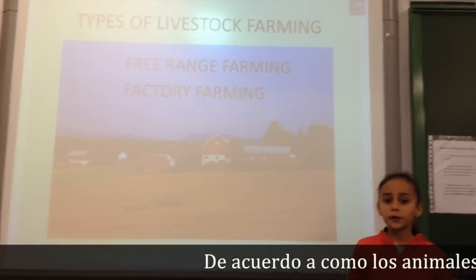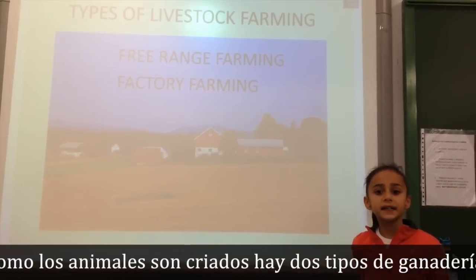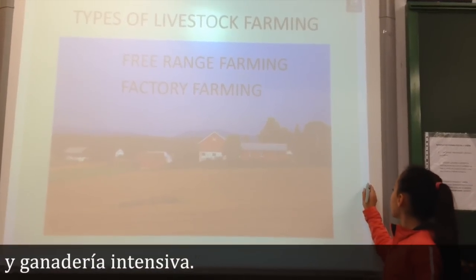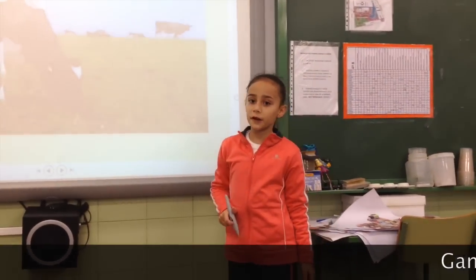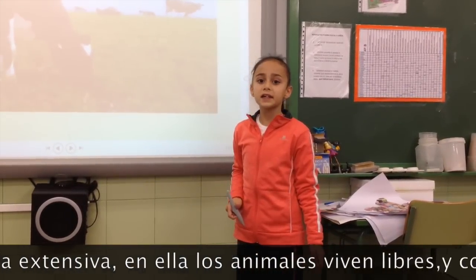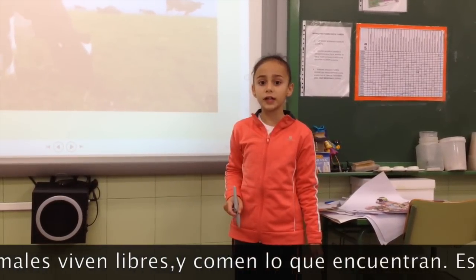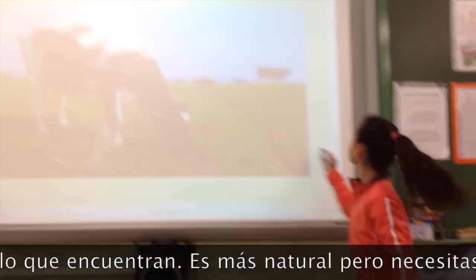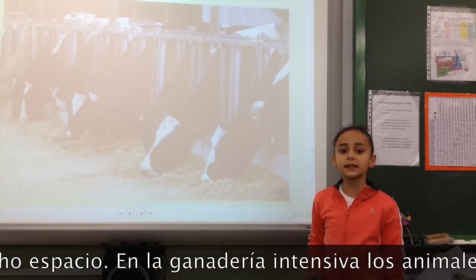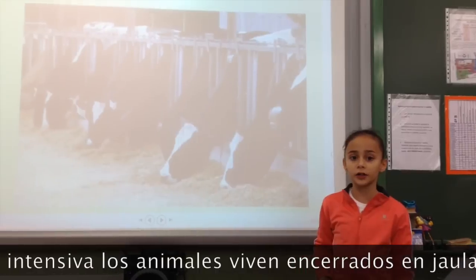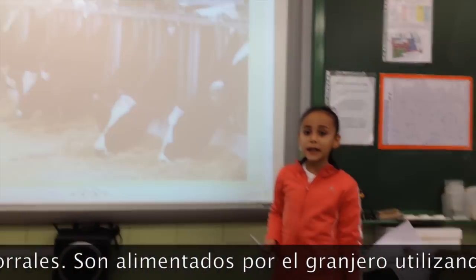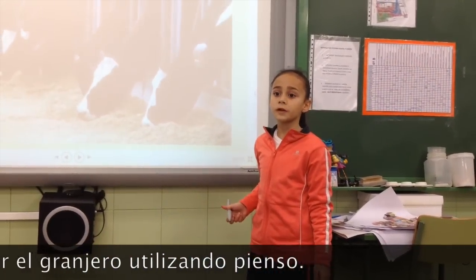According to how the animals are raised, there are two types: free-range farming and factory farming. Free-range farming: the animals live outdoors and they eat the food they find. It's more natural, but you need a lot of space. Factory farming: the animals live indoors in pens or cages. Animals are fed by the farmers with pellet food.